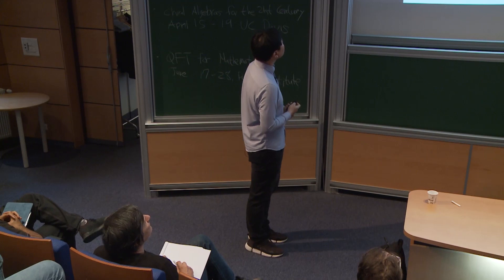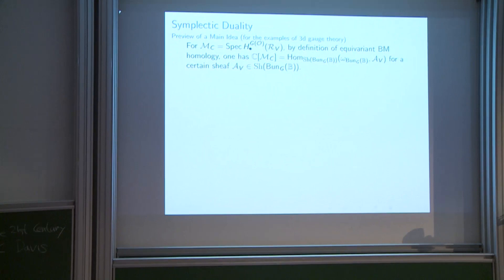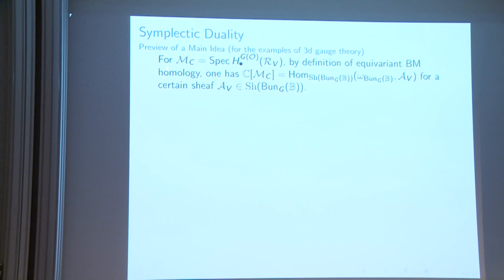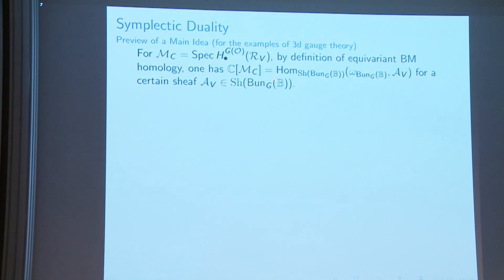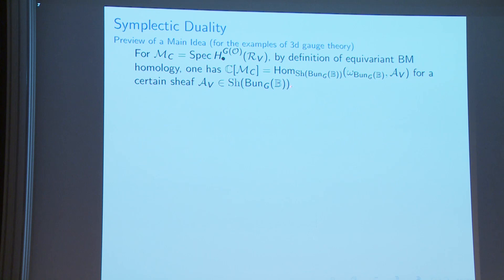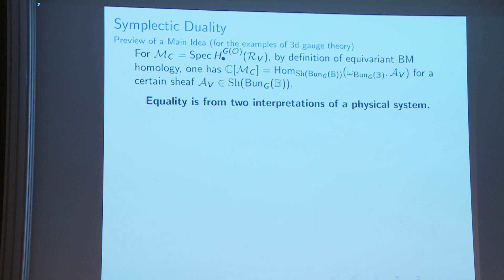The Coulomb branch algebra, as defined, is computed by homology or cohomology — Hom spaces of sheaves. Specifically, constructible sheaves on the G-bundle over the bubble with a dualizing shift. This equality can be understood as two different interpretations of a single physical system. Consider a four-dimensional TQFT.